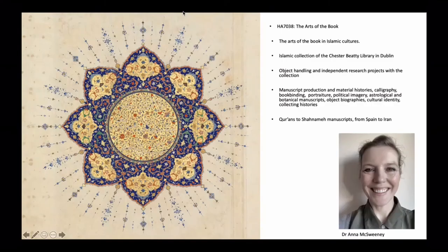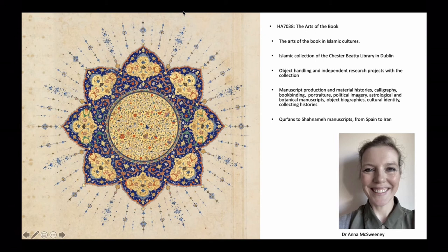My name is Dr. Anna McSweeney, and this is my module, The Arts of the Book. The Arts of the Book looks at the art of the book in Islamic cultures. We will focus on manuscripts and works on paper — from early Korans from 10th century Iraq to the medieval Persian Book of Kings, the Shahnameh manuscripts, looking at Mughal portraiture and Ottoman world maps. We will look at all aspects of Islamic book culture, with a focus specifically on the examples held in the collection of the Chester Beatty Library in Dublin.